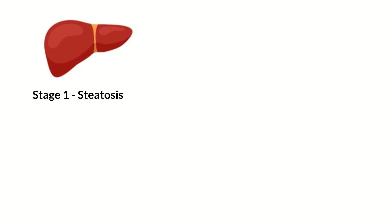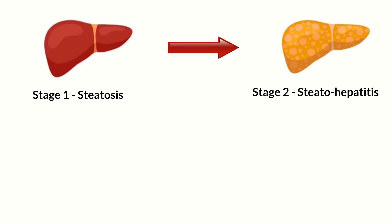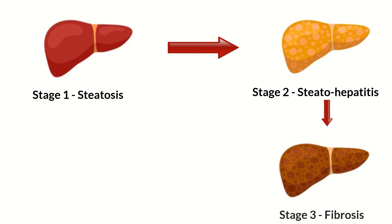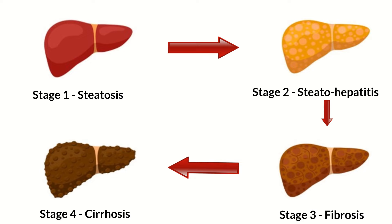There are four stages of progression with fatty liver disease. Stage 1 is simple fatty liver, also known as steatosis. This can lead to stage 2, steatohepatitis, which can eventually progress to stage 3, fibrosis, and stage 4, cirrhosis. In the worst-case scenario, it can ultimately progress to hepatocellular carcinoma. While progression can take years, it can also happen quickly if there is a genetic predisposition.